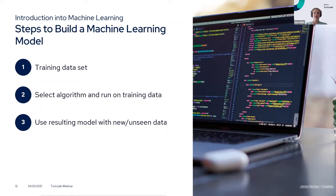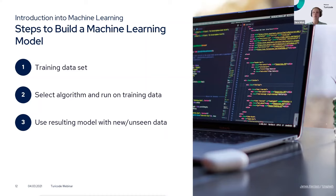Then you select an algorithm — in the case of Turicode, that's usually done by us because we know what works best on which documents — but it's important to find an algorithm that actually solves your problem. Then you train on your data, and at the end you have a model you can use on new, unseen data to process your documents, pictures, or even personal Netflix preferences. Those are the three basic steps to build a machine learning model.